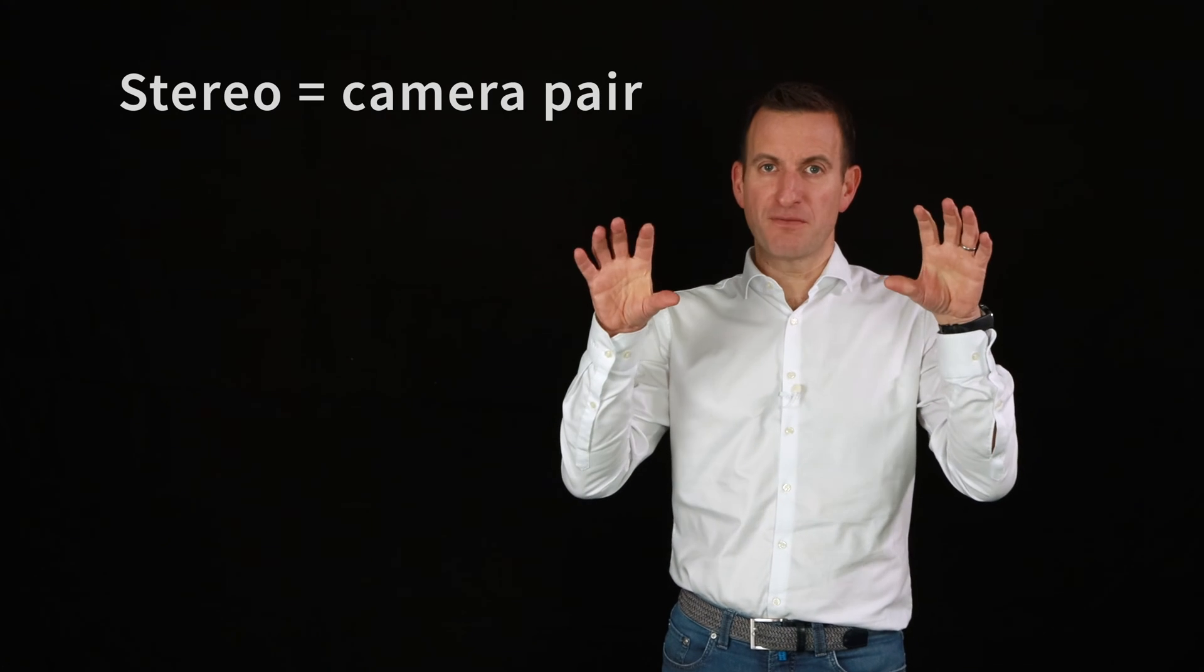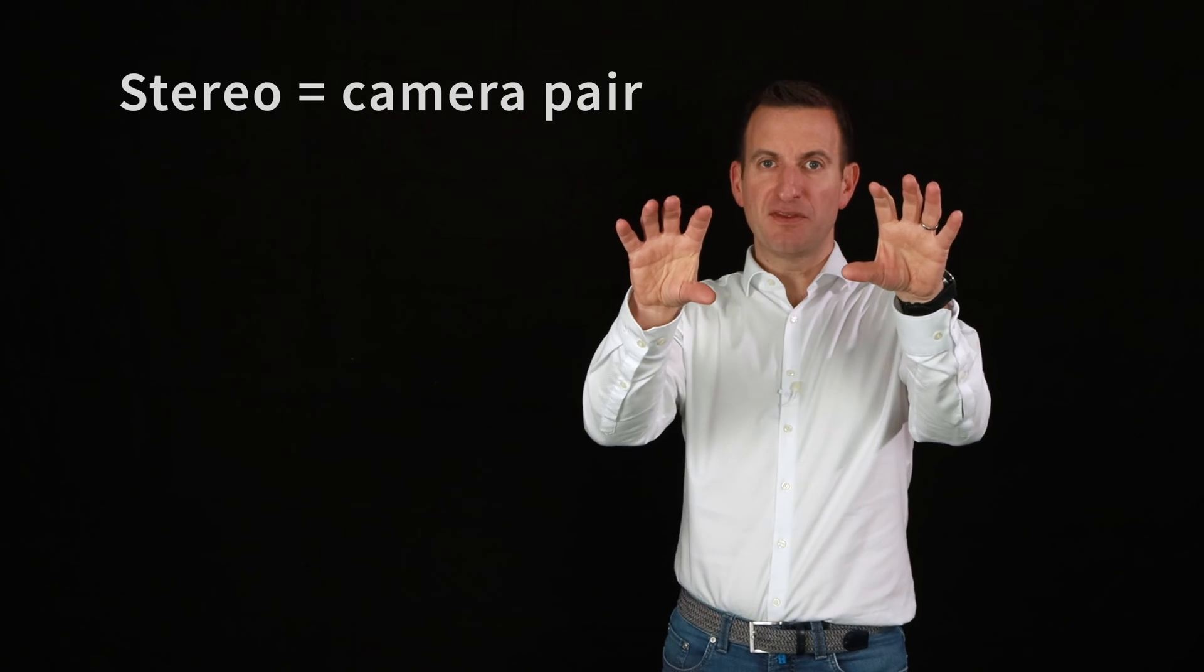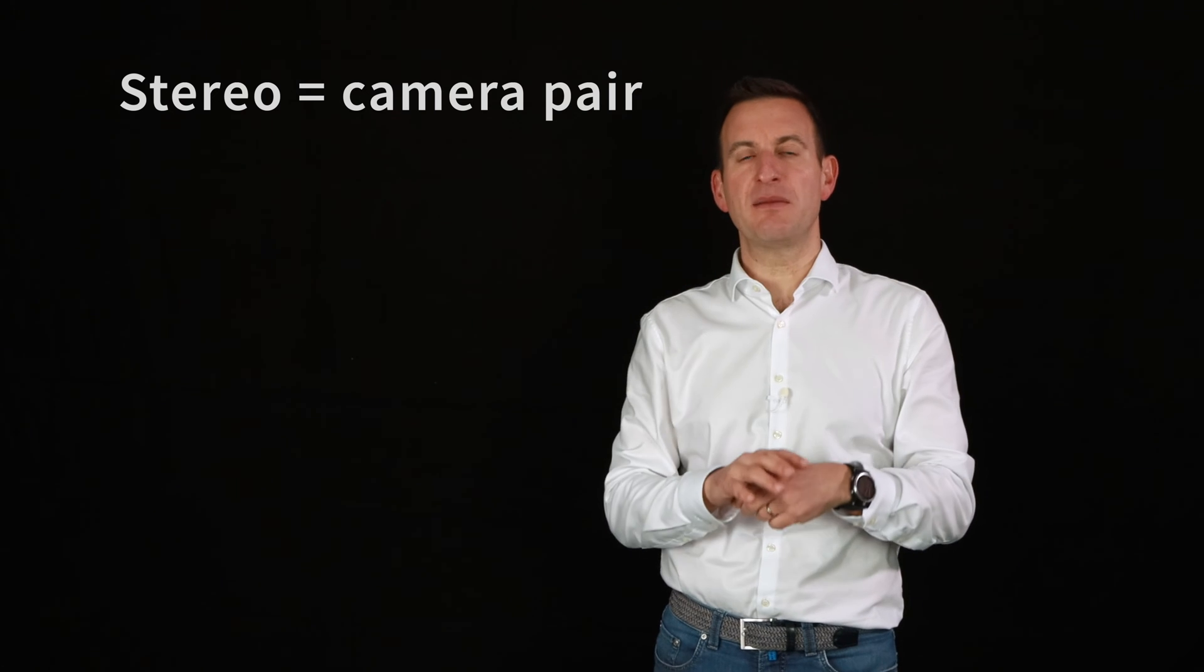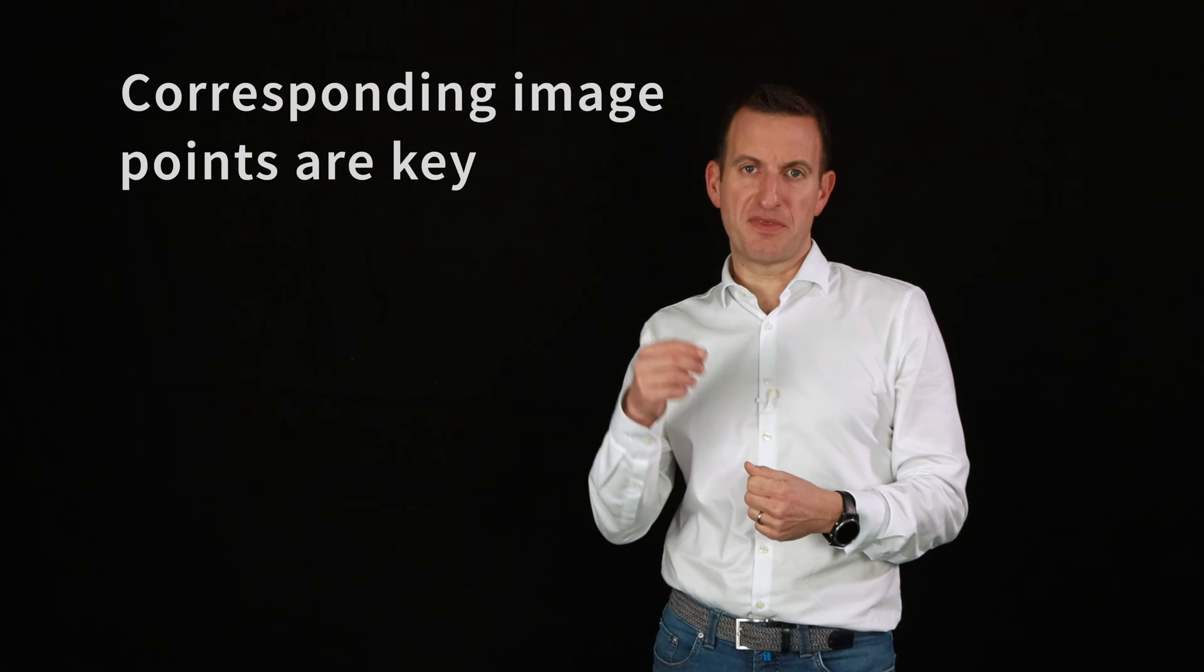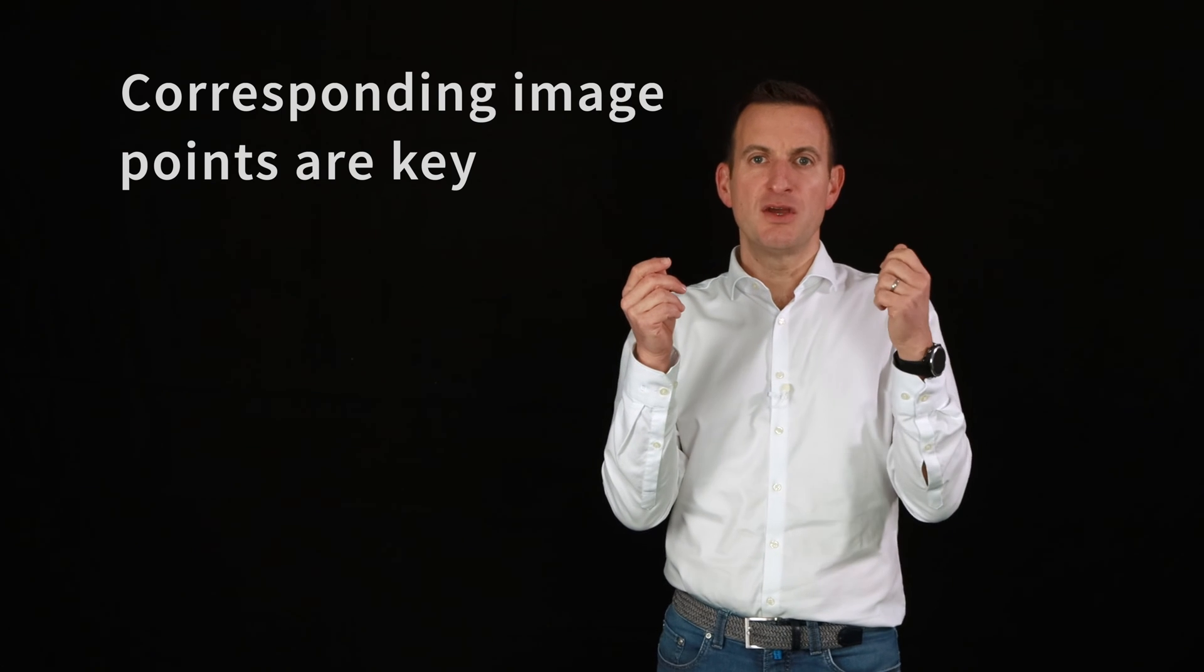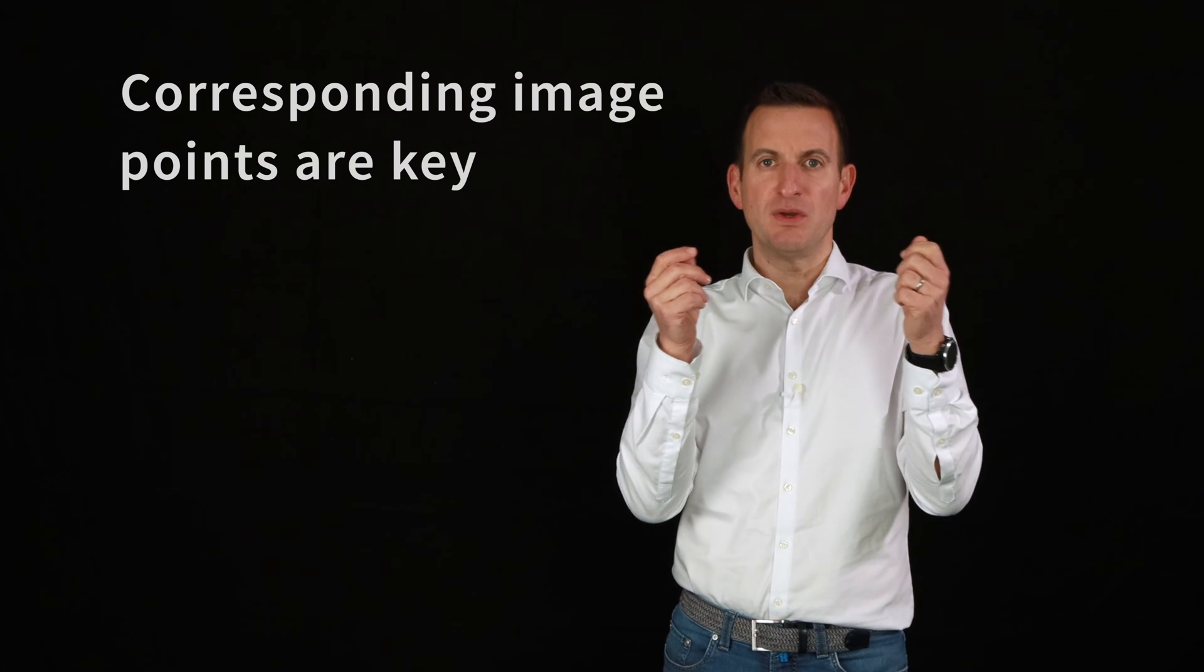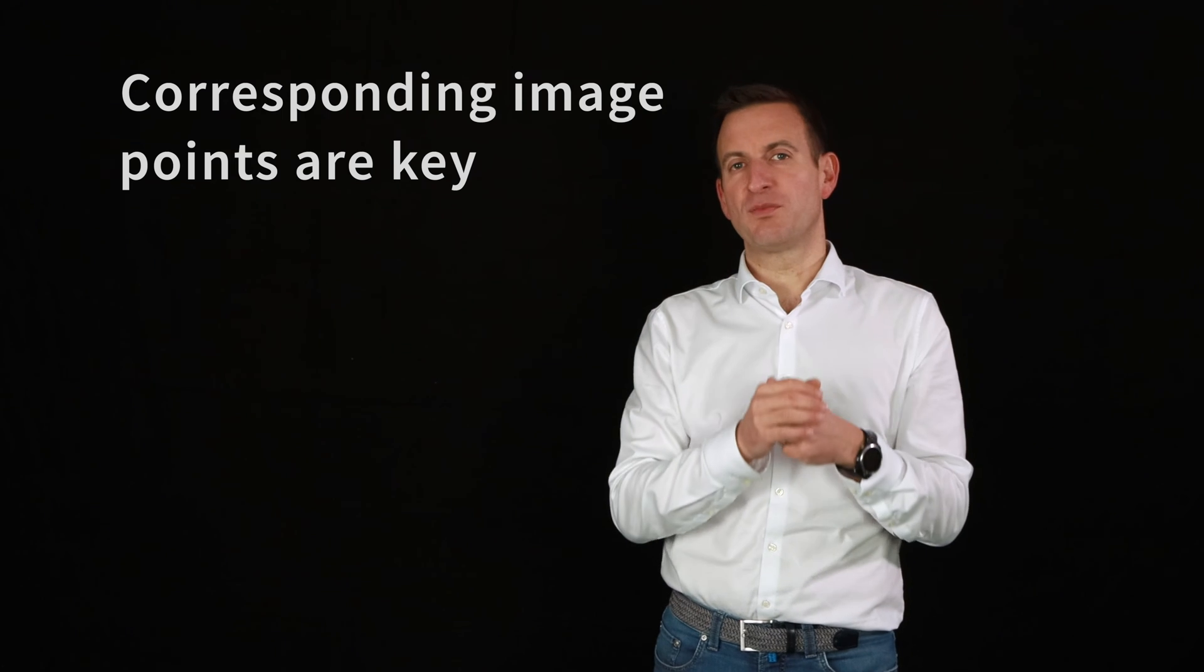The same thing we can also do with a stereo camera. So a stereo camera is actually a pair of cameras, two cameras observing the scene, generating images, typically at the same point in time. And the main thing we need to know are so-called corresponding points. So things that we see in image number one should also be visible in image number two. And we assume to know which points correspond to each other. And based on this information we can compute a 3D model.